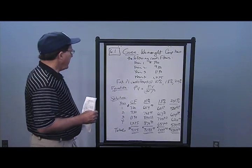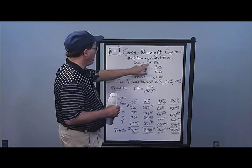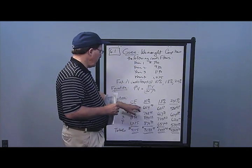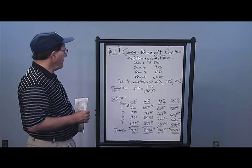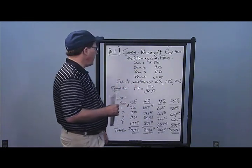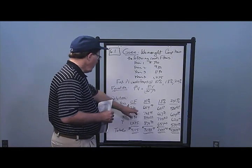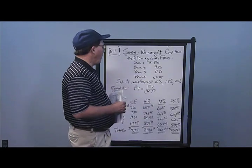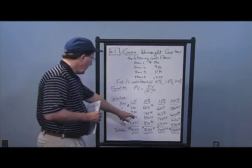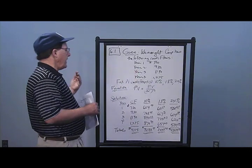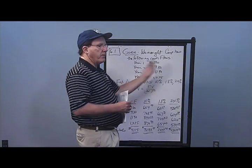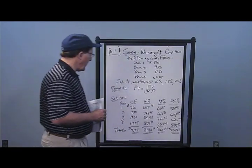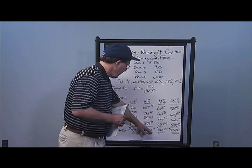To calculate these answers: $720 divided by 1.1 to the first gives $658.54. Then $930 divided by 1.1 squared gives $768.60. Take $1,190 divided by 1.1 cubed to get $894.06, bringing that back to today. And $1,275 divided by 1.1 to the fourth gives $870.84. Add all those up and I get $3,188.05.